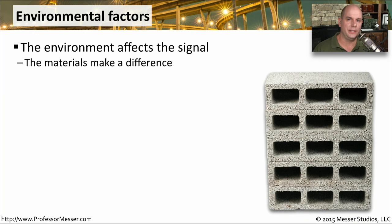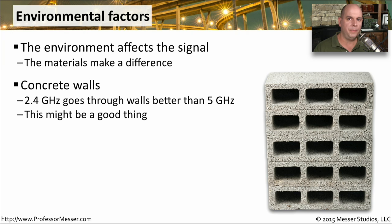We obviously can't see the wireless signal as it's being sent out from the access point, but we do need to be concerned about where these wireless signals are going. The environment where the signal is has a very big impact on the performance of the wireless network. We should look to see what concrete walls might be in the way, because different frequencies react differently to concrete. 2.4 GHz signals tend to pass through walls better than 5 GHz signals, which might reflect off of those walls. This can be good or bad depending on whether you're trying to keep the signal in a very small area, but it certainly has an impact on the overall engineering of the wireless network.